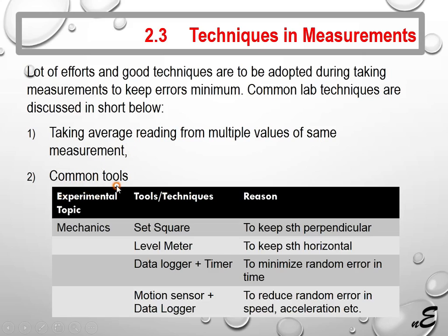Common tools to increase accuracy in measurement include a set square, level meter, data logger with timer, and motion sensor with data logger. A set square is used to keep something perpendicular, since it has a 90-degree angle with two perpendicular sides. We can easily maintain two objects perpendicular to each other by using a set square.